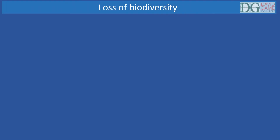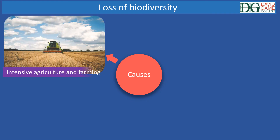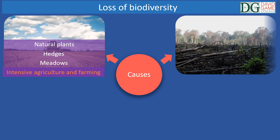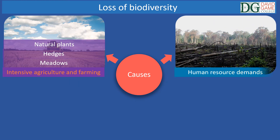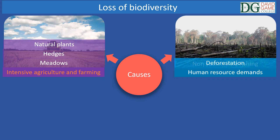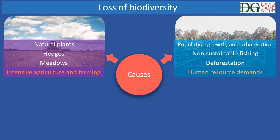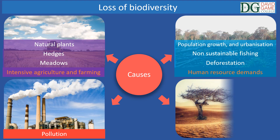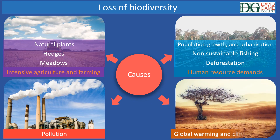The causes of biodiversity loss include intensive agriculture and farming, loss of meadows, hedges, and natural plants from farmland, as farmers grow just one or a few types of crops for economic efficiency. Also, human resource demand such as deforestation, non-sustainable fishing, population growth and urbanization, as well as pollution, global warming, and climate change — all these factors contribute to biodiversity loss.